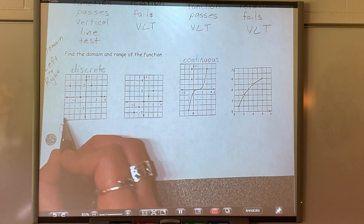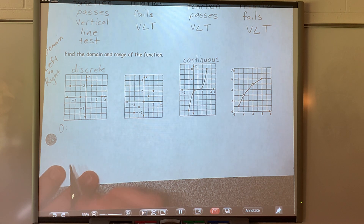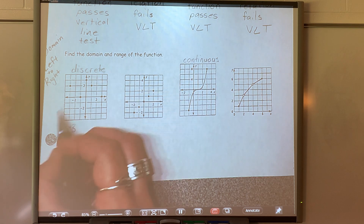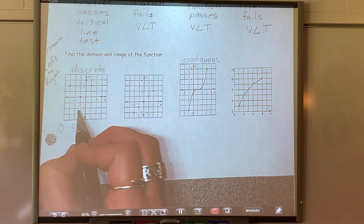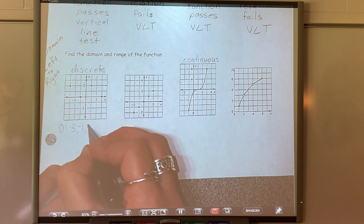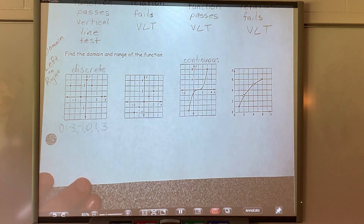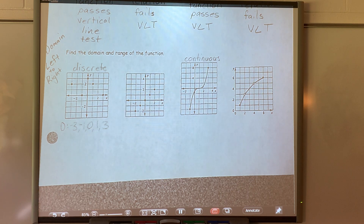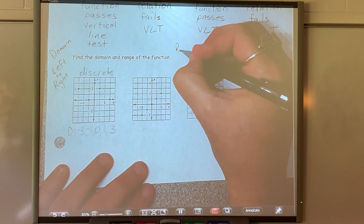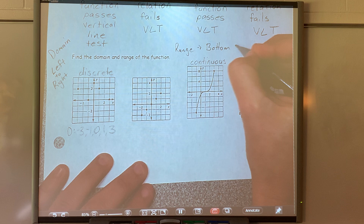If I look from left to right, what is the first x point you see on this graph? Negative 3. From left to right, what's the next one? Negative 1. Keep going — 0, 1, and then 3. Now we're going to look at the range. Range, you read from bottom to top.